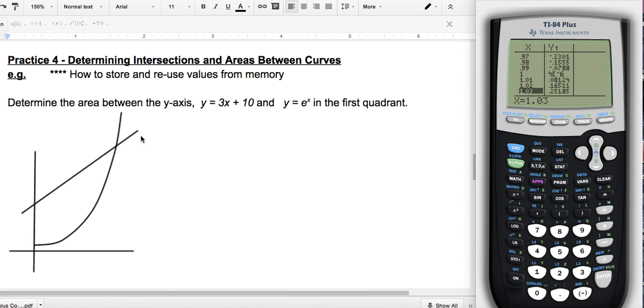Within the AP questions, usually they give you a rough sketch of some sort of the function to know which function you'll be starting with in terms of which one you'll be subtracting. I'm going to clear this second and quit, so I've got back to the home screen here. It says the area between the y-axis, y equals 3x plus 10, and y equals e to the x in the first quadrant. I know that this point is x equals zero, the y-axis, but I need to figure out this intersection point right here.